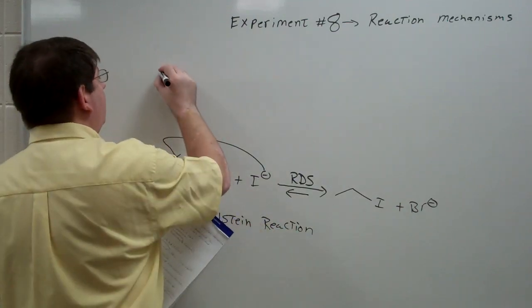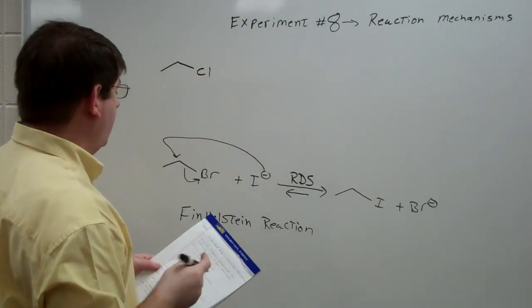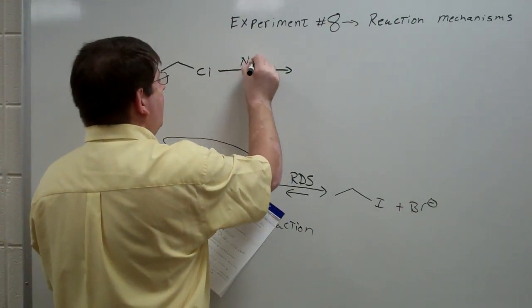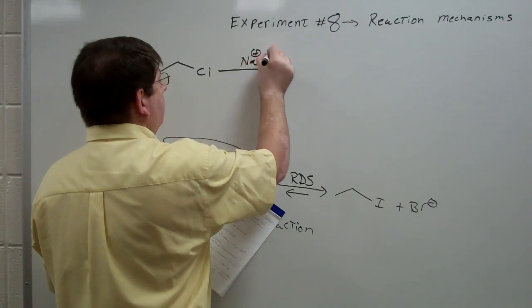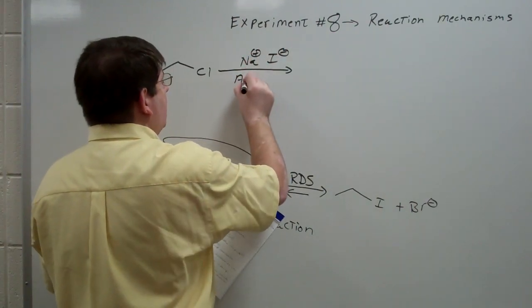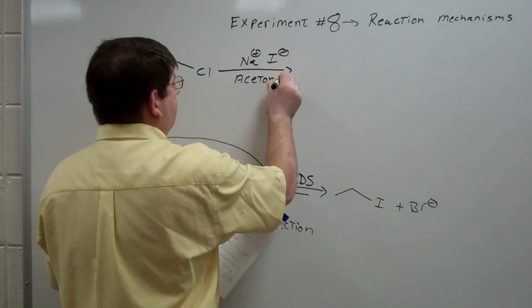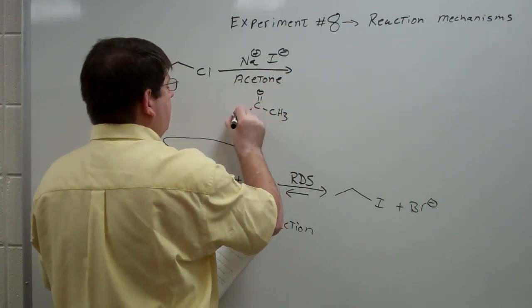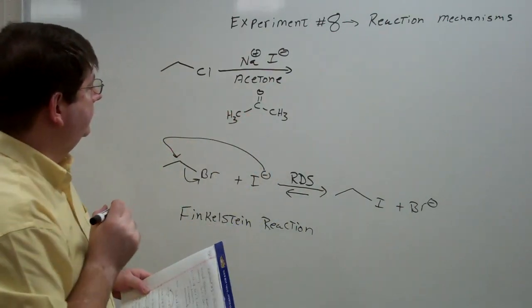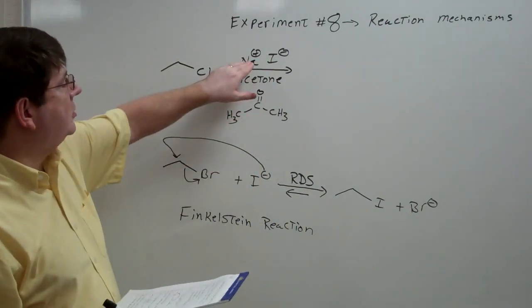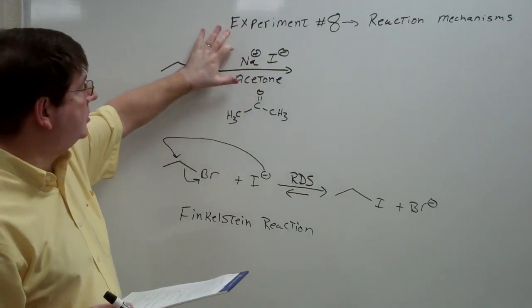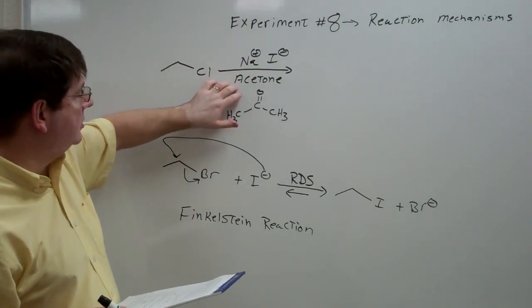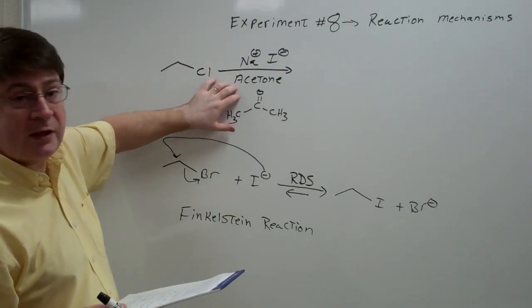So if we start off with chloroethane or bromoethane, it doesn't matter, and we add that to sodium iodide in acetone. Acetone is just a simple ketone. It turns out that sodium iodide is soluble in acetone. This salt, which we normally don't think of as being soluble in organic solvents, is soluble in this very simple ketone, this very simple organic solvent known as acetone.